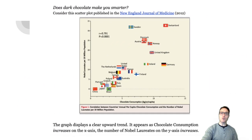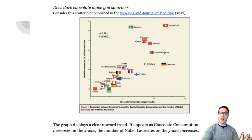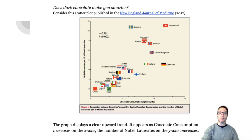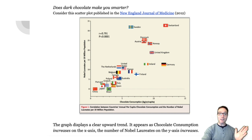Does dark chocolate make you smarter? Look at this article that was published in the New England Journal of Medicine in 2012. It's a scatter plot. There's an X and a Y axis, and they plotted points, here represented by flags, to represent countries. So on the X axis we have chocolate consumption, adjusted for population — kilograms per capita per year. And on the Y axis, we have Nobel laureates per capita, also adjusted for population.